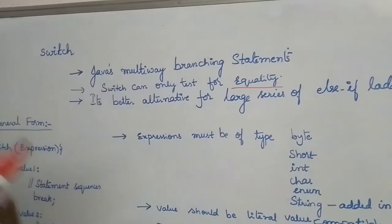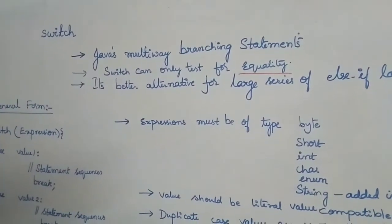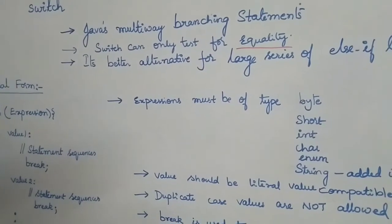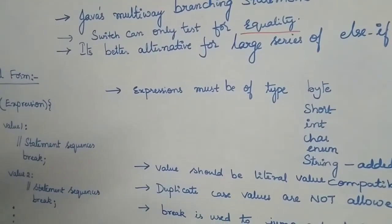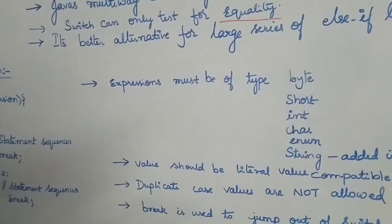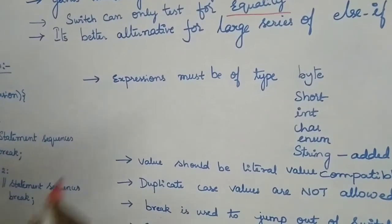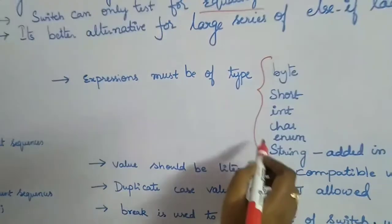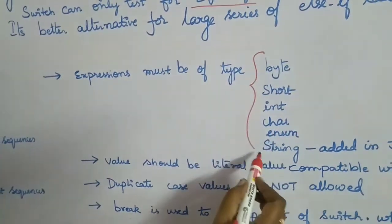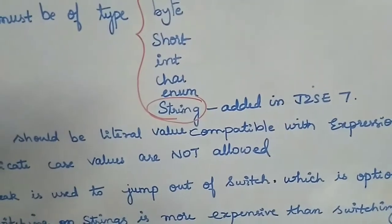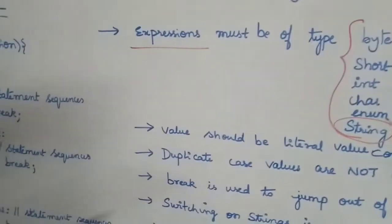Switch is a better alternative for larger series of if-else ladders. When you have more conditions, program readability and evaluation efficiency reduce. The expressions in a switch should be of type byte, short, int, char, enum, and from Java SE 7, strings have been added as valid expression types.